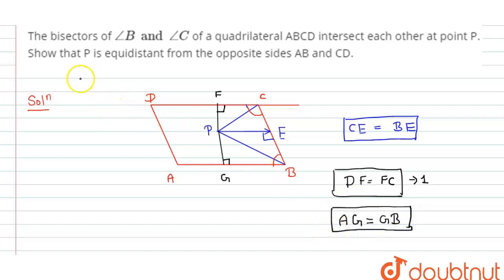This proves our question which says show that point P is equidistant from opposite sides. This point P is equidistant from opposite sides.